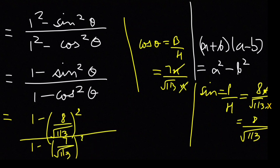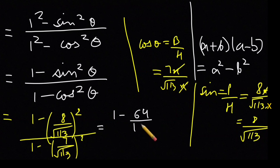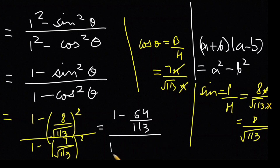I hope aapko yeh samaj aa raha hai. So now solving: numerator mein 1 minus 64/113, aur denominator mein 1 minus 49/113. LCM lekar, numerator mein (113−64)/113 = 49/113, aur denominator mein (113−49)/113 = 64/113.